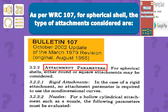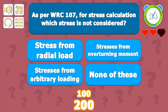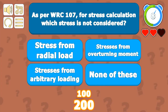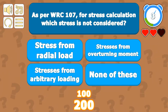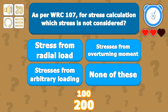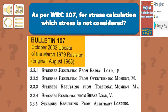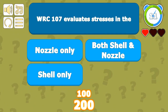For nozzle attachments, some additional parameters need to be included, while for rigid attachments no additional parameters are required when using the non-dimensional curves as per WRC 107. For stress calculation, all stresses are addressed — not only those from radial load, arbitrary loading, or moments — but also stresses resulting from shear loads and torsional moments.